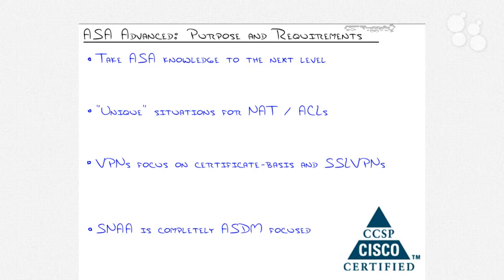What you can expect to see in this series includes different unique situations for NAT and access lists. Whereas in SNAF they talk about using NAT and access lists to accomplish core objectives, here we take it to the next level and do some more complex things with them. You'll also see more of a VPN focus, but far more on certificate-based systems — certificates and certificate authorities — covering site-to-site VPNs, remote access VPNs, and SSL VPN concepts.